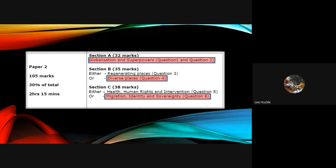Let's begin by deconstructing Paper 2 into its component parts. Here's the overview, so again exactly the same as Paper 1, it is worth 105 marks, 30% of your total A Level grade.